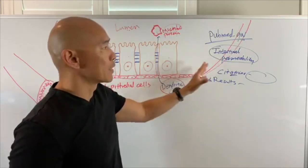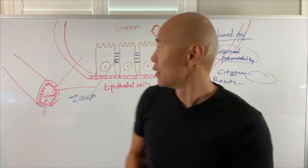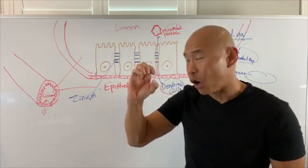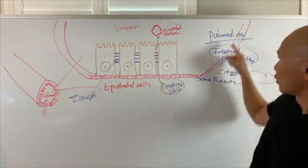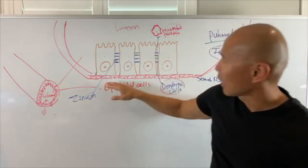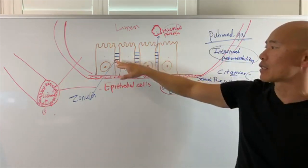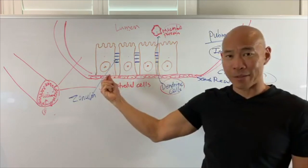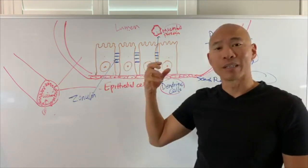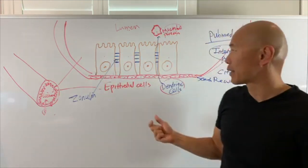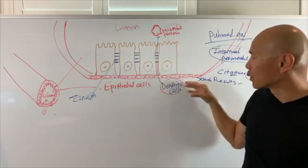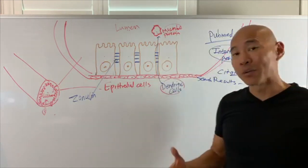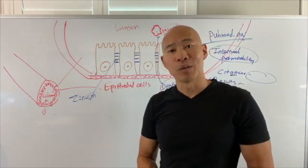Here are the different types of intestinal permeability. We have the intestinal lumen — the inner opening of your gut. These are the epithelial cells and the villi. We have proteins that hold the gap together, kind of like mortar or glue. The space is called the tight junction, so your immune system can survey the environment and elicit an immune response. Leaky gut is normal — it's not bad.